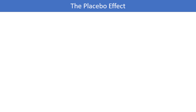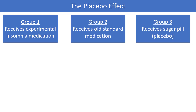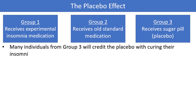We have already mentioned the convention of having one of the levels of the explanatory variable represent a placebo group. Whenever possible, it is convention to have a placebo group in a designed experiment. Many individuals from the placebo group will credit the placebo with curing their insomnia, even though there is no active medication in their pill. Many attribute this to the power of the mind — individuals who believe they are receiving medication, but really aren't, tend to improve. For this reason, new medications usually have to outperform a placebo to be considered effective.